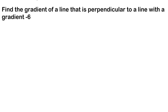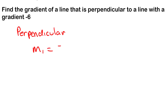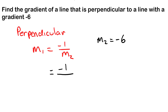Here we need to find the gradient of a line that is perpendicular to a line with gradient negative six. For perpendicular lines, we use the formula m1 equals negative one over m2. Substituting m2 as negative six, the negatives cancel out and we're left with one over six. So a line with gradient one over six is perpendicular to a line with gradient negative six.